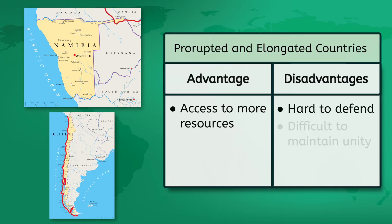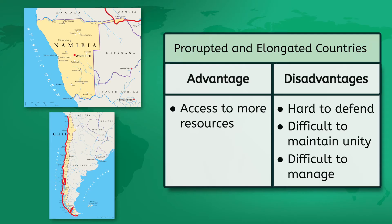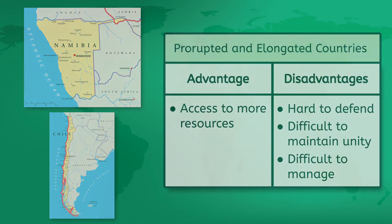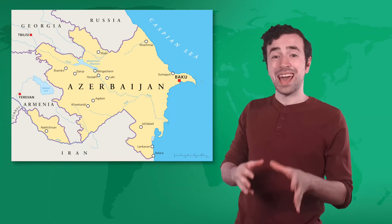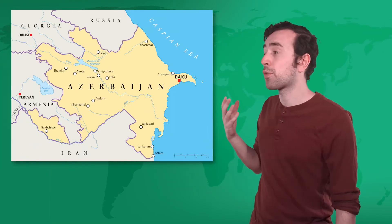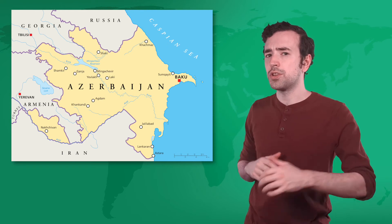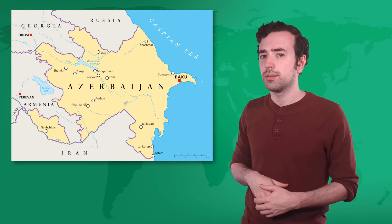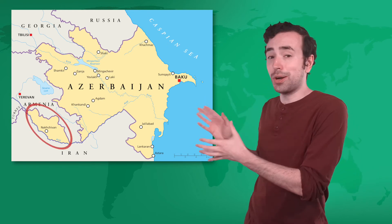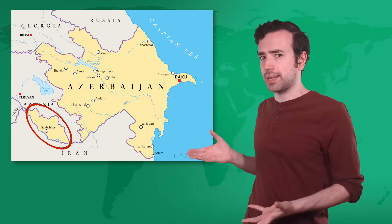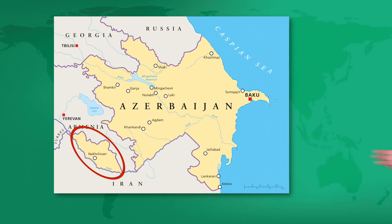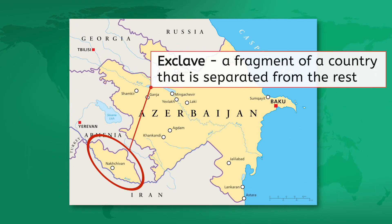It can also be difficult to maintain unity and to manage transportation and communication in these shapes. Now look at Azerbaijan — a fragmented state. This part of the country is totally disconnected. This piece is called an exclave: a fragment or piece of a country that is separated from the rest.